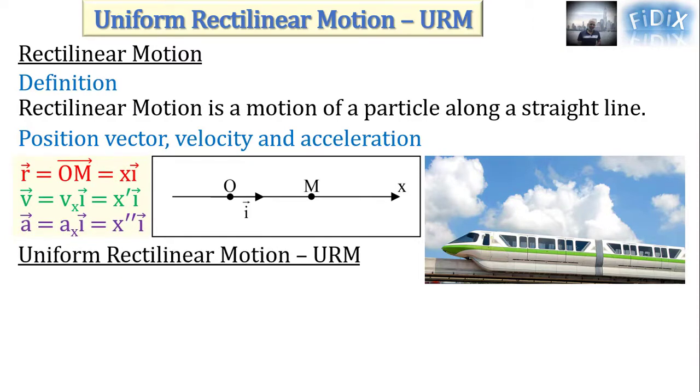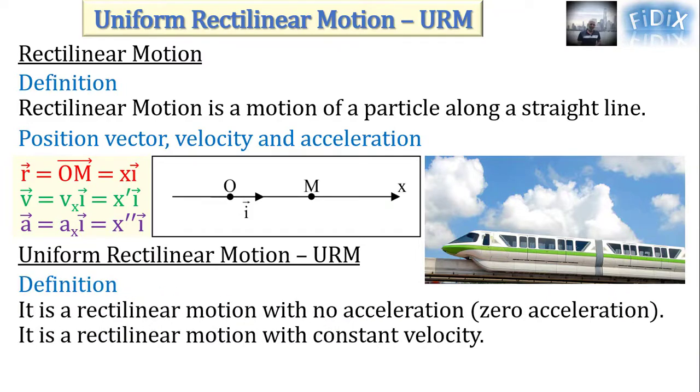The Uniform Rectilinear Motion is a rectilinear motion with no acceleration or constant velocity. In this case, Ax equals 0, or Vx is constant, and its primitive x equals Vx*t plus x0.